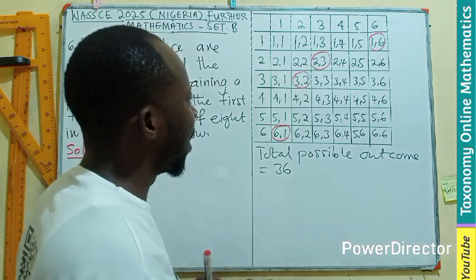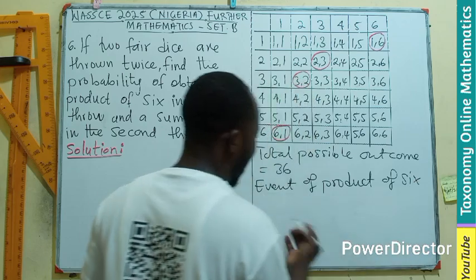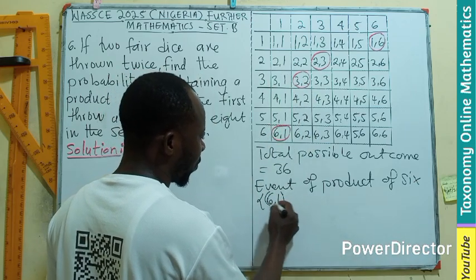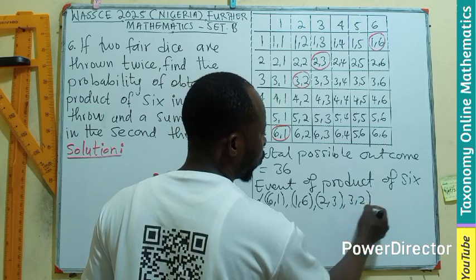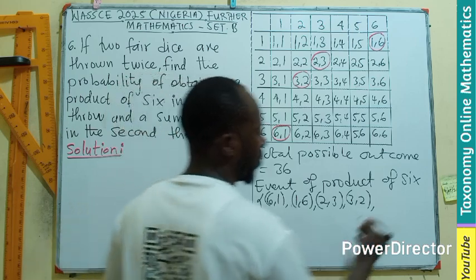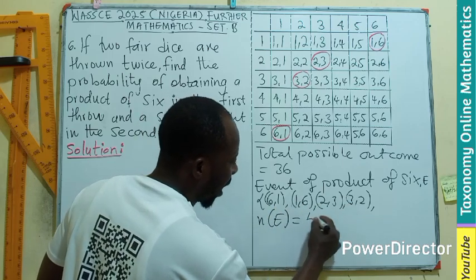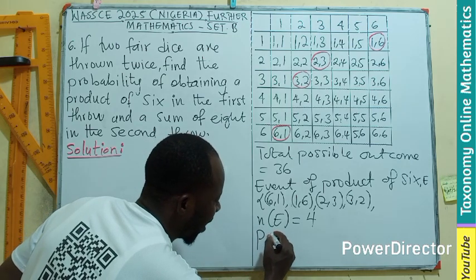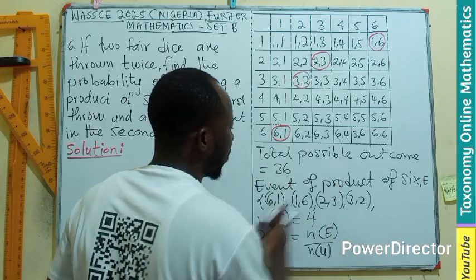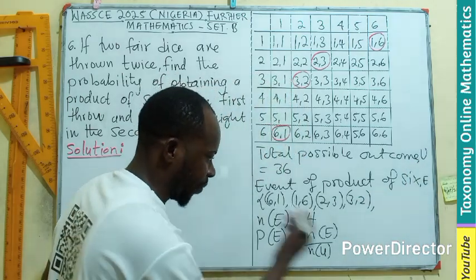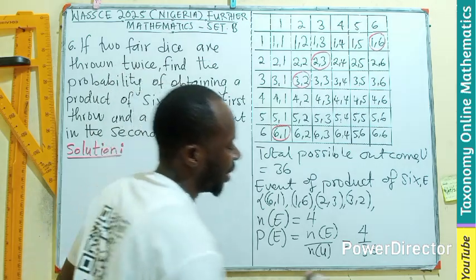So the event E for product of six consists of: (1,6), (6,1), (2,3), and (3,2). The number of outcomes in event E is four. Therefore, the probability of event E equals the number of favorable outcomes divided by the sample space: 4 over 36, which simplifies to 1 over 9.